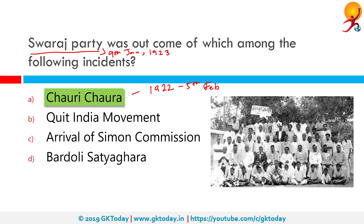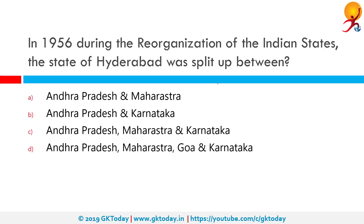In response, Gandhiji withdrew the Civil Disobedience Movement that had been gaining momentum in India as part of the freedom struggle. Not many people agreed with this decision, including the National Congress at the time. However, people generally followed when Mahatma Gandhi spoke, and the Swaraj Party was formed as a protest to his decision.